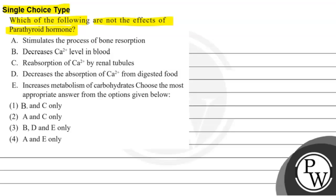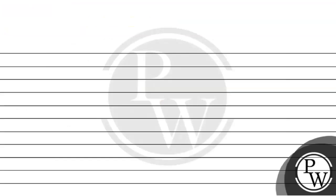The options are: A - it has stimulated the process of bone resorption; B - it has given a decrease of calcium levels in blood; C - it has given a decrease of the absorption of calcium from digestive foods; D - it has given an increase of the metabolism of carbohydrates; E - it has given a decrease of the metabolism of carbohydrates. The answer options given are: B and C only, A and C only, B, D and E only, or A and E only.